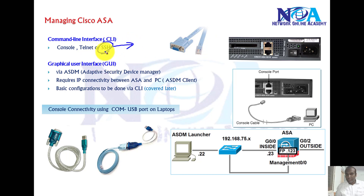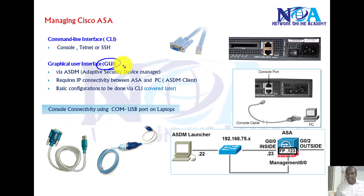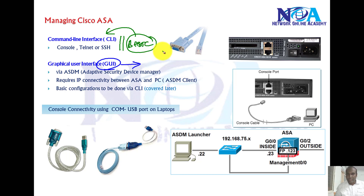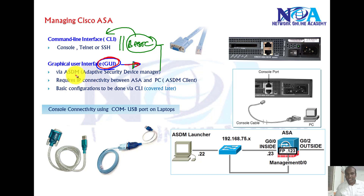SSH is the more preferred way to do remote access because it is encrypted, compared to Telnet. We can also configure the ASA to be managed via a graphical interface. For basic configurations like IP configuration or routing, we'll use the command line, but for advanced configurations on the Cisco ASA firewall, we'll manage it via GUI.